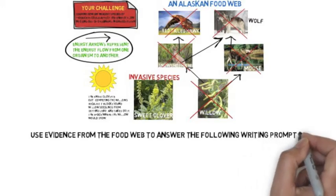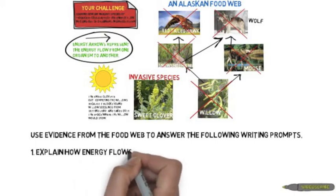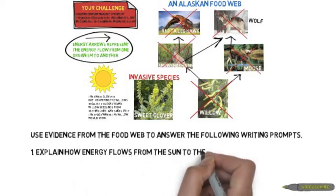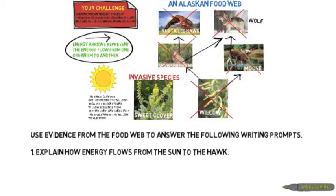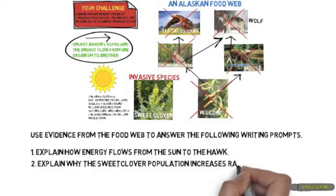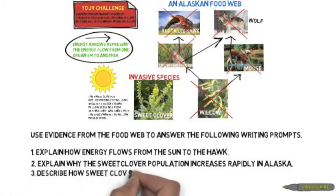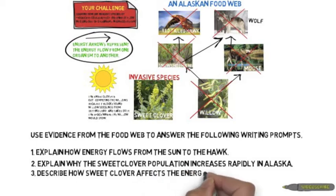Try these problems — use evidence from the food web to answer the following writing prompts. Number one: explain how energy flows from the sun to the hawk. Number two: explain why the sweet clover population increases rapidly in Alaska. Number three: describe how sweet clover affects the energy flow in the ecosystem. Pause, and when you're ready to resume, we will practice some eighth grade science exam questions.